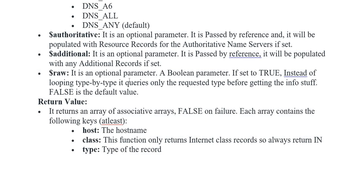Iske baad variable raw — yeh optional parameter hai jiske andar boolean hai. Isko hum set karte hain, agar true hai toh instead of looping, yeh type by type queries kar rahe hote hain, request kar rahe hote hain, ki aapne kis type ka put karna hai, aur jab aap add kar rahe hote hain, yeh isliye use kia jaata hai.